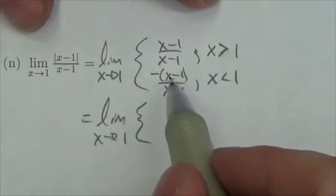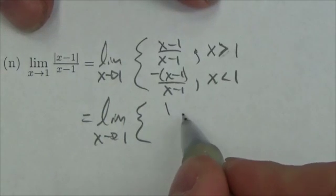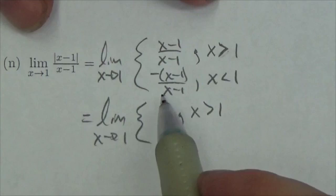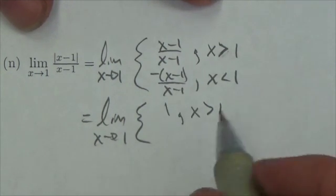And this is quite interesting because x minus one over x minus one is going to be simply one if x is greater than one, and then I have that negative x minus one over x minus one is negative one if x is less than one.